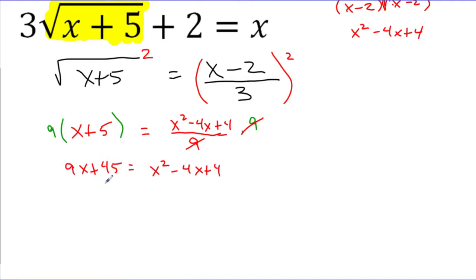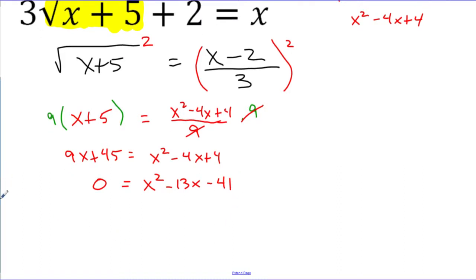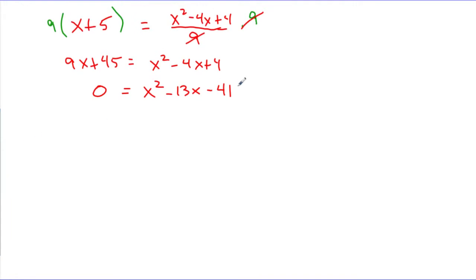Now let's subtract the expression on the left over to the right side. When I do negative 4x minus 9x, I get negative 13x. And 4 minus 45 gives negative 41. So now my goal is to solve this quadratic equation: x squared minus 13x minus 41 equals 0. We can try factoring all we want, but this will not factor because 41 is a prime number — the only factors are 41 and 1, and they won't add to negative 13. So my only backup is to use the quadratic formula.